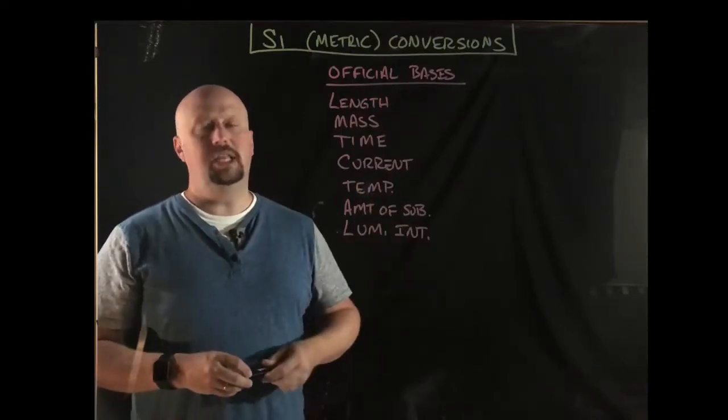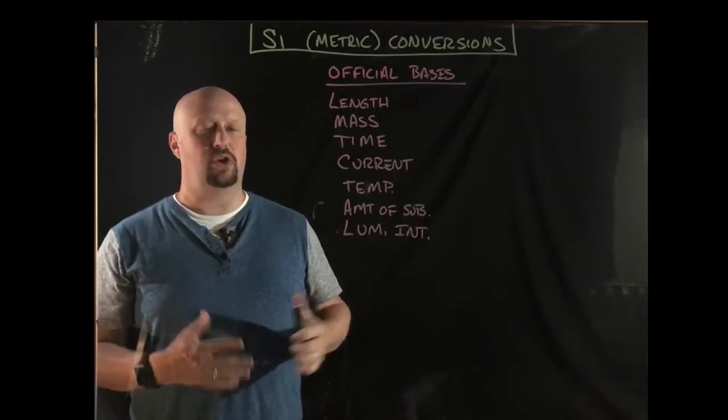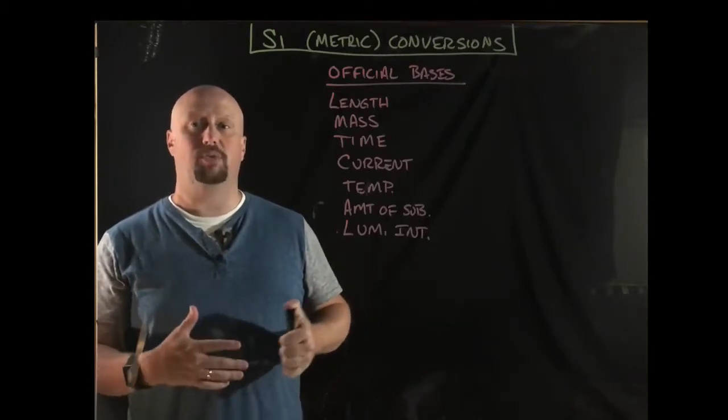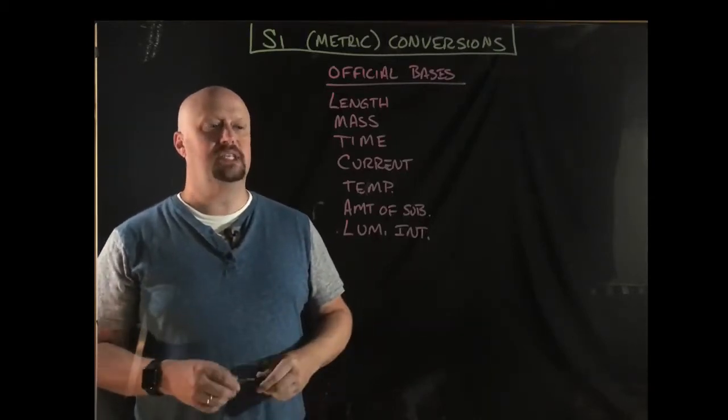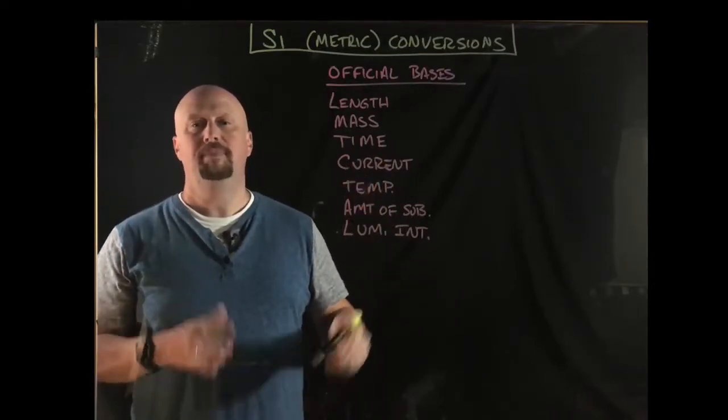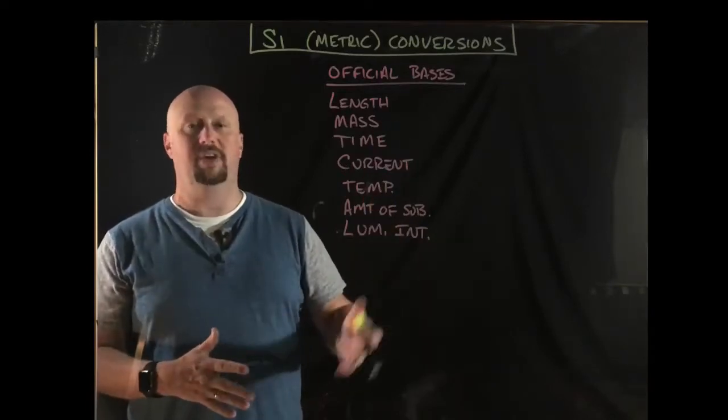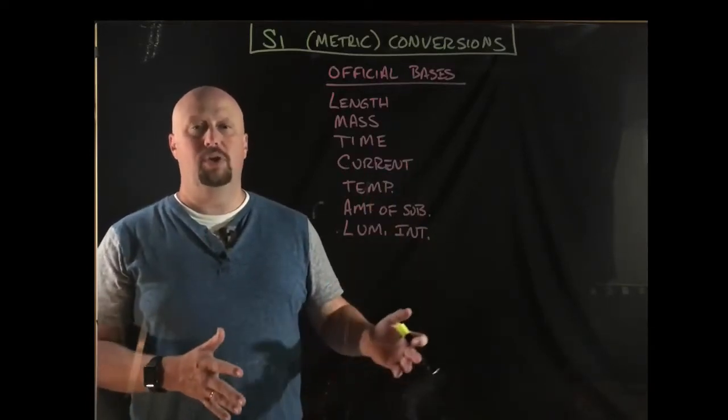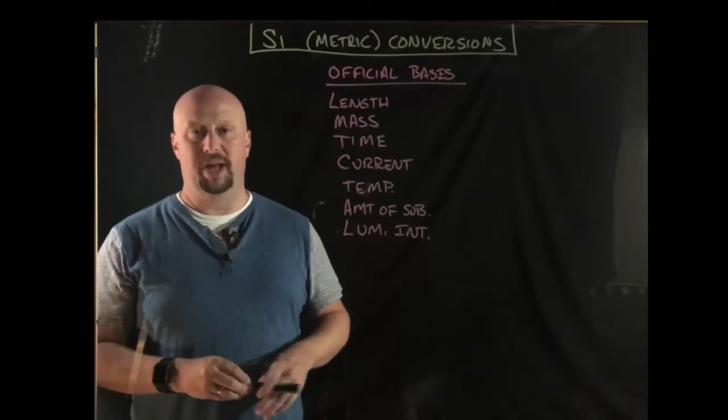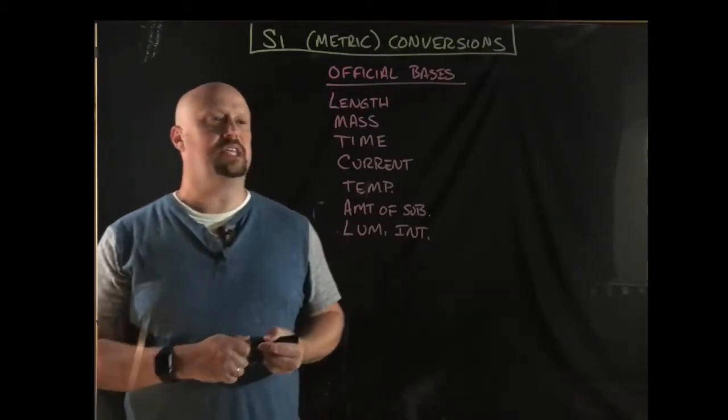So officially there are seven SI bases. We're going to see here in a minute that there are more bases than that or at least more things that we're going to use as SI bases, but essentially these seven are the essential ones and everything else is either derived from these seven or it's something that we sort of treat as though it were a metric or an SI unit, even though it might not actually be.